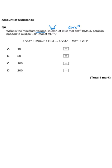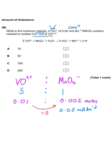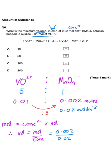This question asks what volume of a particular concentration of potassium manganate(VII) solution is needed to oxidize a particular number of moles of VO₂⁺. From the equation, VO₂⁺ and KMnO₄ are in a 5:1 ratio. We have 0.01 moles of VO₂⁺, so KMnO₄ is five times smaller — 0.002 moles. With a KMnO₄ concentration of 0.02, volume equals moles divided by concentration, giving 0.1 dm³, or 100 cm³.